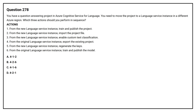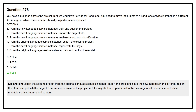Options: A — four, one, two. B — four, two, six. C — four, one, six. The correct answer is Option D: four, two, one. Export the existing project from the original language service instance, import the project file into the new instance in the different region, then train and publish the project. This sequence ensures the project is fully migrated and operational in the new region with minimal effort while maintaining its structure and content.